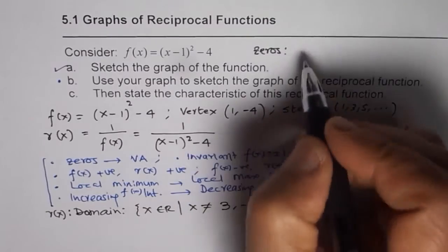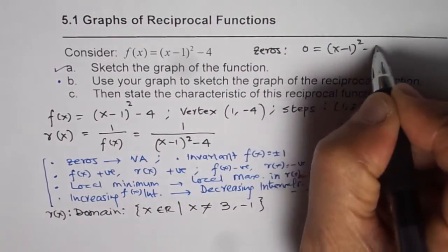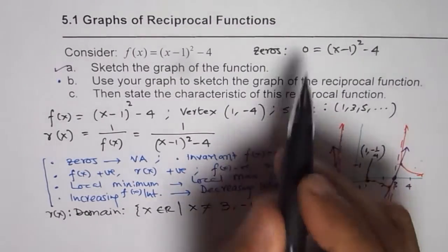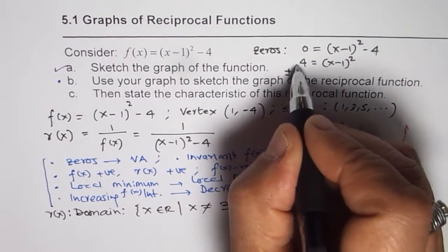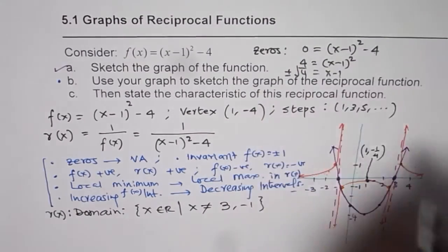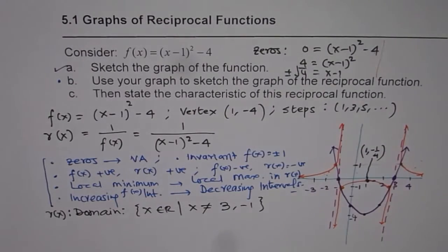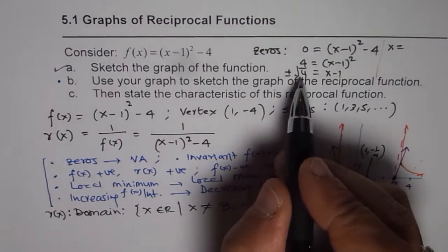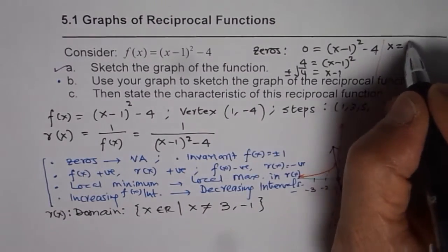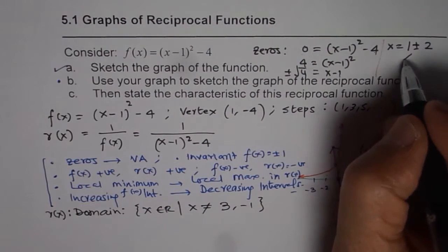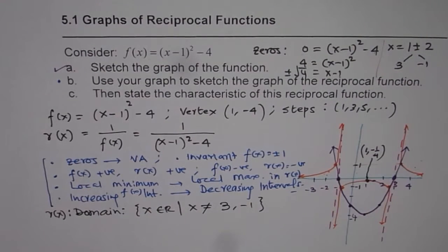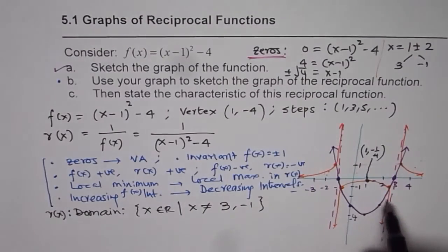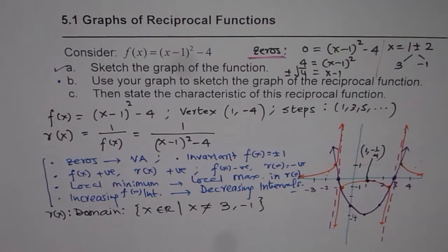Let me show you how to calculate zeros. Set 0 = (x - 1)² - 4. Bring 4 to the other side: 4 = (x - 1)². Take the square root: ±2 = x - 1. Therefore x = 1 ± 2, giving us x = 3 and x = -1. We got it graphically, but sometimes you need to calculate. These zeros become vertical asymptotes and domain restrictions.